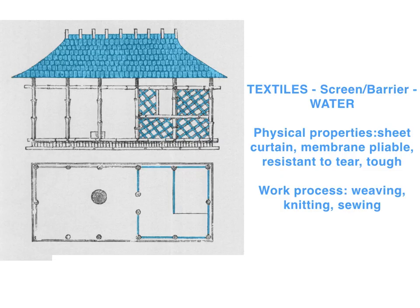Next we come to the textile element. In Semper's system, any screen, barrier, or curtain wall is a textile element. On the drawing of the hut you can see two kinds of textile element filling in between the members of the frame, colored pale blue. On the roof the textile element looks like it is made from tiles, while on the walls it is a wickerwork of some kind, perhaps made of rope or long grass.